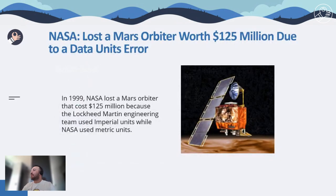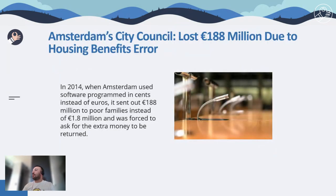Let's have a look at incidents where companies compromised the quality of data. In 1999, NASA lost a Mars orbiter that cost $125 million due to data inconsistency. This is one example of the financial consequence of poor data quality. In another example, citizens who would have regularly received €155 instead were sent €15,500, and some even got as much as €34,000.